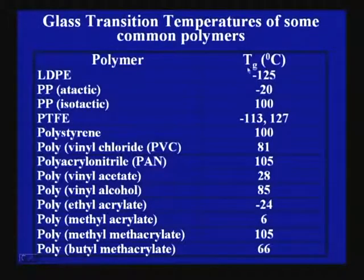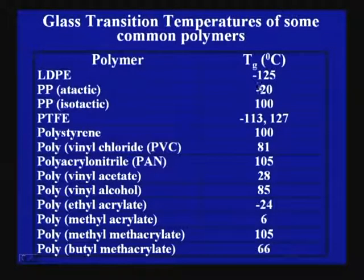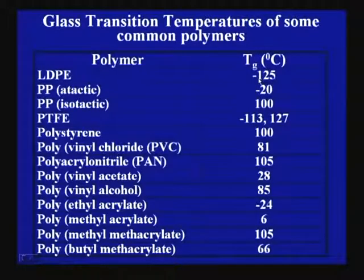Here, certain glass transition values are shown. LDPE — its Tg is quite low, maybe minus 120 to minus 150 degrees. These Tg values are not fixed; they can vary from one batch of polymer to another batch, because not all batches manufactured in industry will have the same molecular weight level and molecular weight distribution. That is why it can vary.